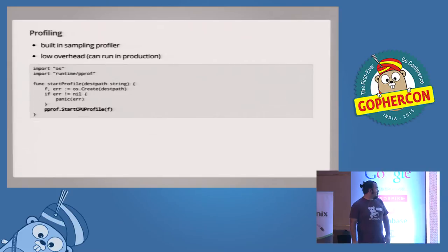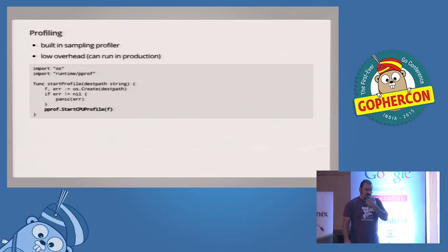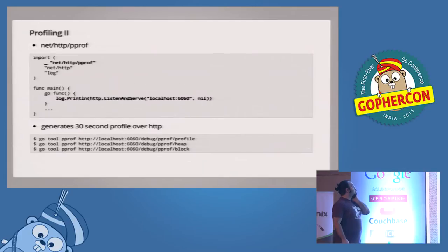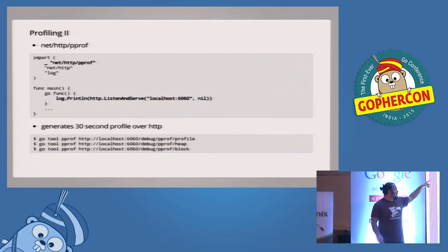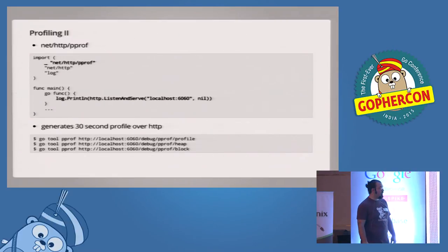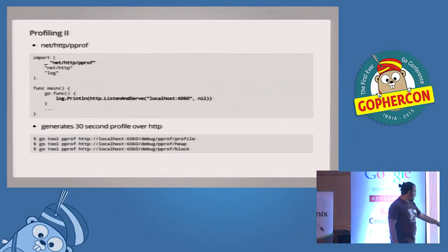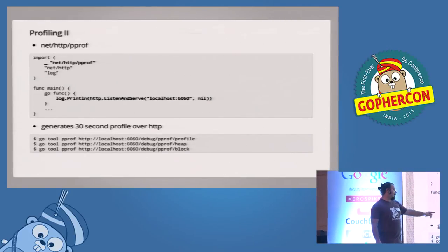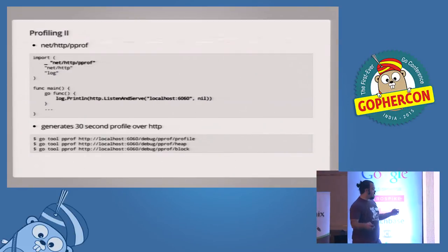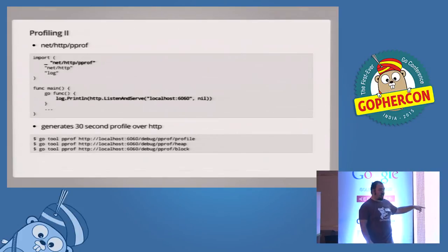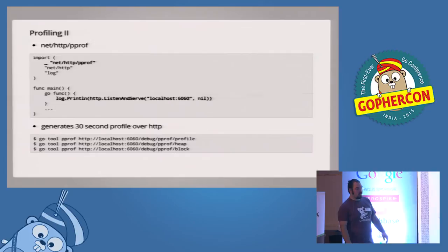Here's how you import runtime/pprof and start a CPU profile on an io.Writer — it doesn't have to be a file, it can be anything. It outputs a pprof file. There's another way: you can use the net/http/pprof package, imported for its side effects — it registers some global HTTP handlers. If you listen and serve using the global HTTP handler by passing a nil handler, it will respond to different HTTP endpoints. You can run go tool pprof directly against those endpoints to get the CPU profile, heap profile, blocking profile, and more.